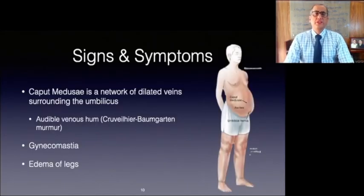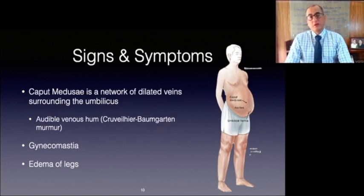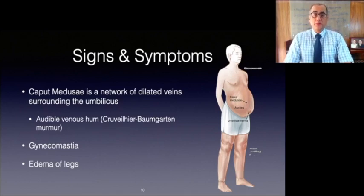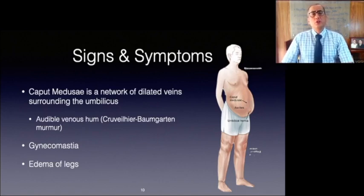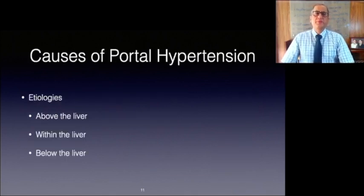The clinical manifestations of portal hypertension may include caput medusae, splenomegaly, edema of the legs, and gynecomastia in males. Caput medusae is a network of dilated veins surrounding the umbilicus, caused by increased blood flow in the umbilical and periumbilical veins, and is often accompanied by an audible venous hum — known as the Cruveilhier-Baumgarten murmur. The gynecomastia is due to increased conversion of androstenedione from adrenal production to estrogen in liver failure. Edema of the legs is seen because of alterations in systemic hemodynamics and low albumin levels. Clinically, it may be difficult to detect portal hypertension until pressures are much higher.